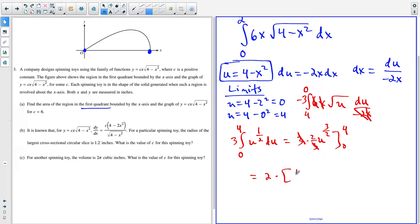So now three over three cancels, and this is going to be two times four to the three halves minus zero to the three halves. And this is going to work out to two times the square root of four is two, two to the third power is eight. And this is just going to be 16. So that's our solution to A.